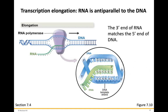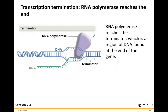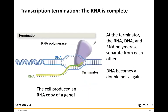The 3' end of the RNA matches the 5' end of the DNA strand. In the third phase, termination, RNA polymerase reaches a terminator — a region of DNA found at the end of the gene. At the terminator, the RNA, DNA, and RNA polymerase separate from each other. The DNA recombines to form the double helix again, and the cell has produced an RNA copy of the gene.